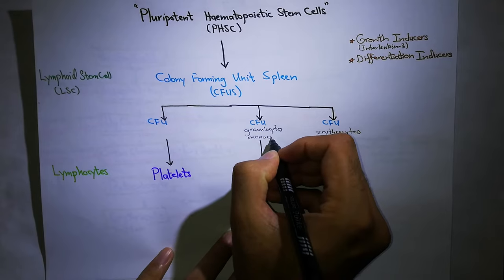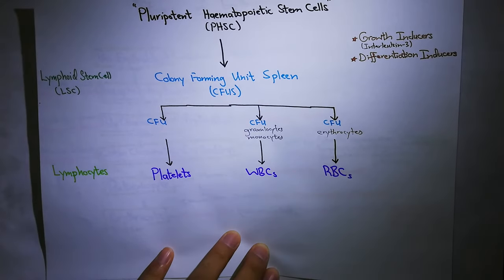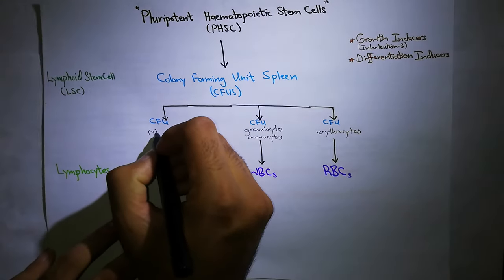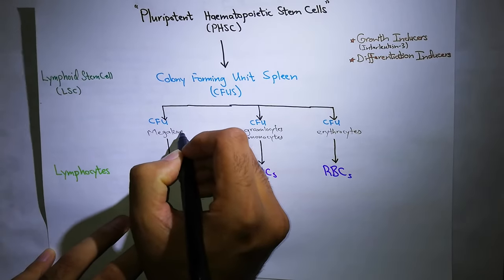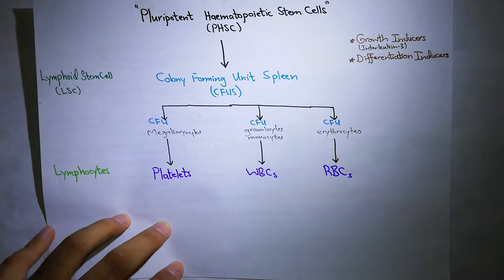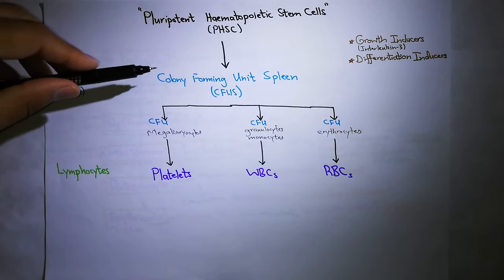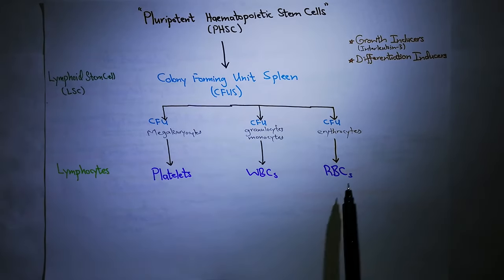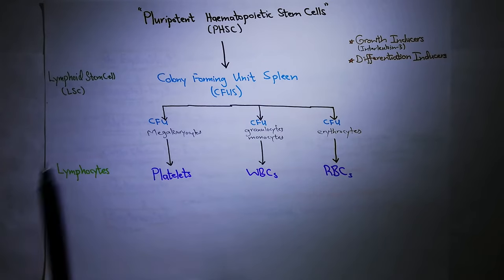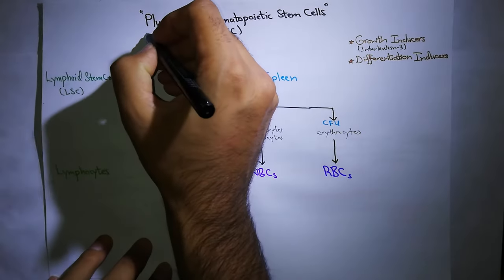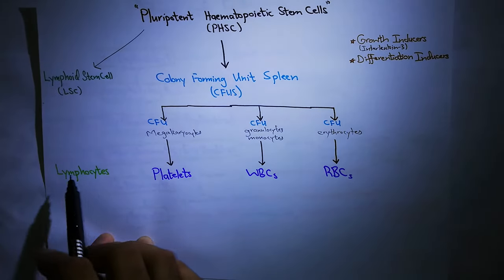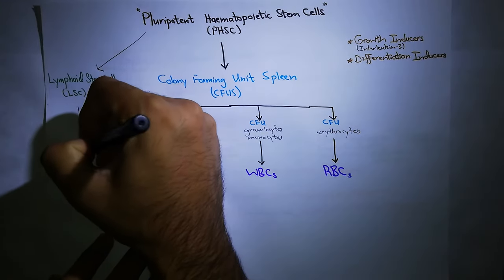WBCs come from colony forming units. And platelets come from colony forming units megakaryocytes. Simply put: pluripotent hematopoietic stem cells give rise to colony forming units, and three types of colony forming units produce platelets, WBCs, and RBCs. Separately, lymphocytes originate from lymphoid stem cells, which also arise from the pluripotent hematopoietic stem cells. Lymphoid stem cells differentiate into lymphocytes.